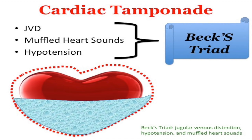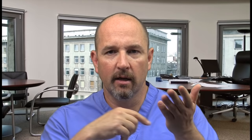Know Beck's triad for pericardial effusion — a sequela of trauma or pericarditis. Beck's triad is JVD, muffled heart sounds, and hypotension. When you see JVD, think three pathologies: CHF, pericardial tamponade, or tension pneumo. The difference between a simple pneumo and a tension pneumo is shock. If they're in shock — altered mental status, hypotension, looking like they're going to crash — it's a tension pneumo. If they're not in shock, it's not a tension.